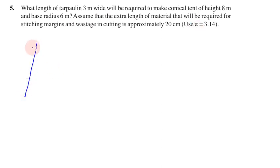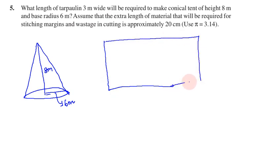A conical tent will make a conical tent. So this is a conical tent. The height is 8 meters. Base radius is 6 meters. What length of tarpaulin is 3 meters wide? So width is 3 meters. To make the conical tent of 8 meter height and 6 meter base radius.